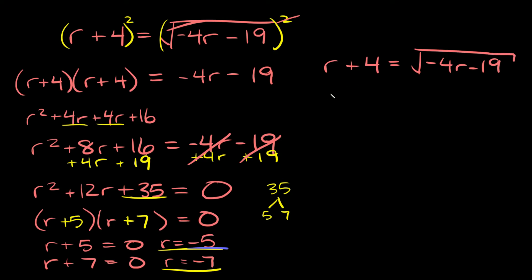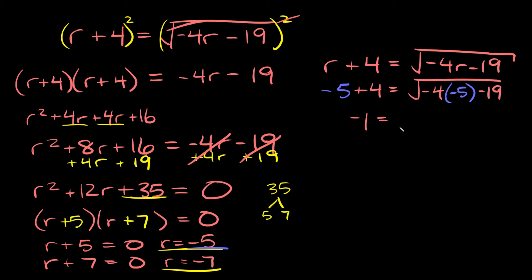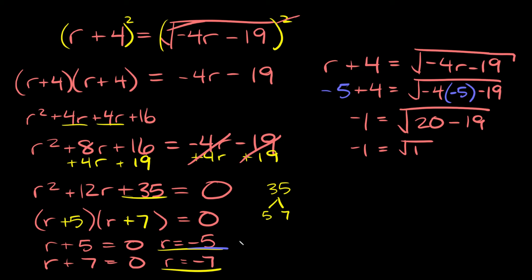Plugging in negative 5 for r: negative 5 plus 4 equals negative 1 on the left. On the right: negative 4 times negative 5 is positive 20, and 20 minus 19 is 1, so we get the square root of 1. Is negative 1 equal to the square root of 1? No — the square root of 1 is positive 1, not negative 1. So r is equal to negative 5 is an extraneous solution.